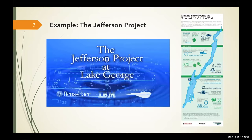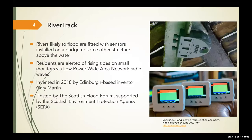What does this mean for water? It means an enormous surge in the amount of data available. One example is IBM collaborating with Rensselaer University at a lake in the United States — they were doing a few hundred observations per year, and now they're doing several million with multiple sensing platforms. This creates a comprehensive understanding of biochemical processes and lake morphology that was simply not available in a pre-digital world. Another example is river track: rivers likely to flood are fitted with sensors on bridges, and residents are alerted of rising water levels by radio, enabling more flood resilience at very low cost.